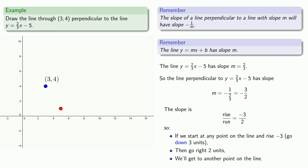And again, it's worth noting that this would take us to the point (5, 1). And once we have two points on the line, we can draw the line.